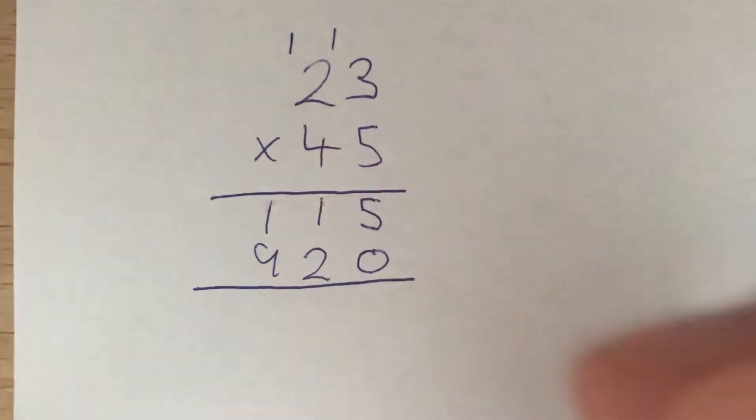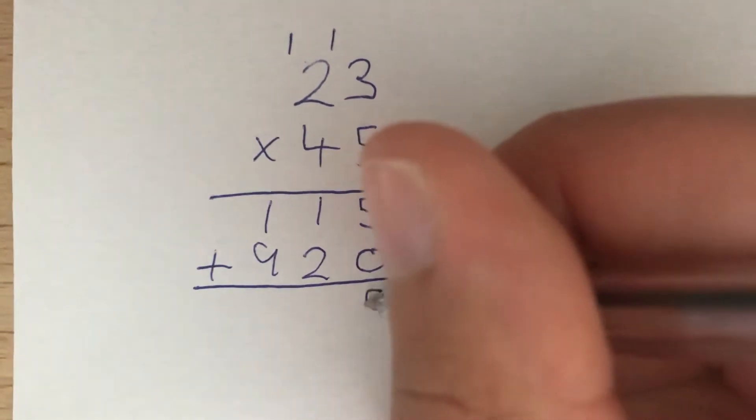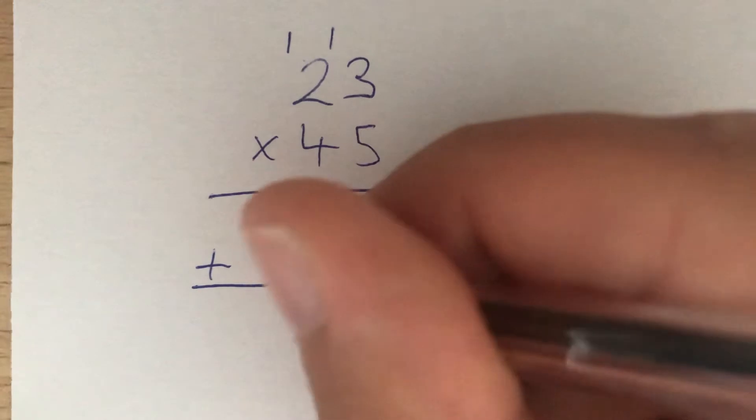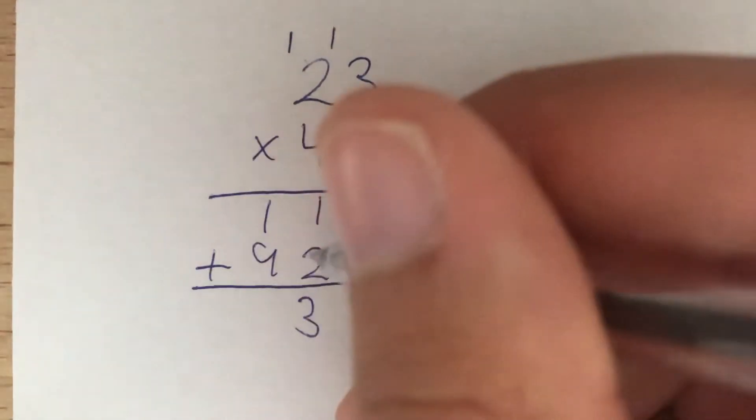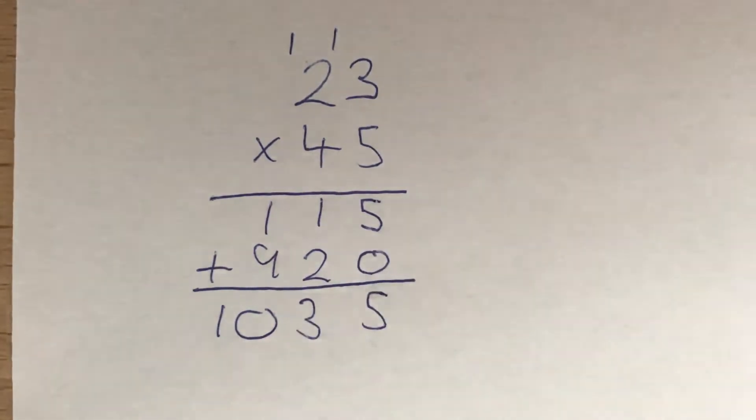Now that we've got these two numbers, we add them together. 5 add 0 gives us 5, 1 add 2 gives us 3, 1 add 9 gives us 10. So we get an answer of 1035.